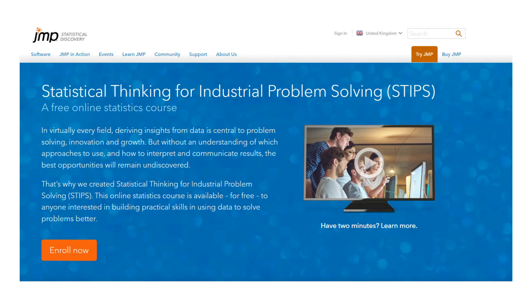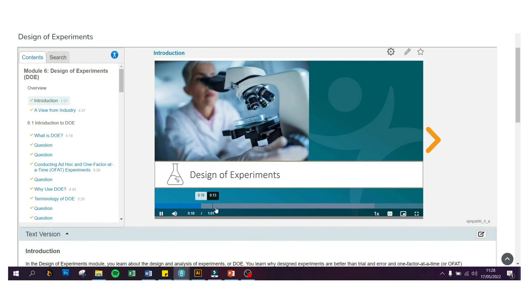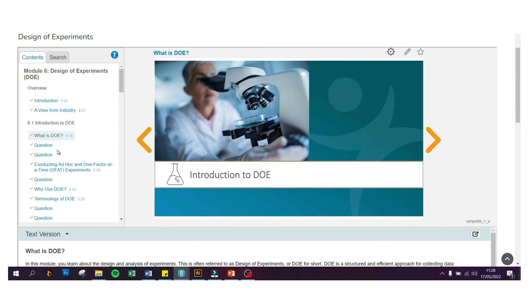For more information and learning about DOE, you can click on the description below which will link you to one of our STIPS module. STIPS is a free online statistics course developed by JUMP that you can take and learn on your own pace.